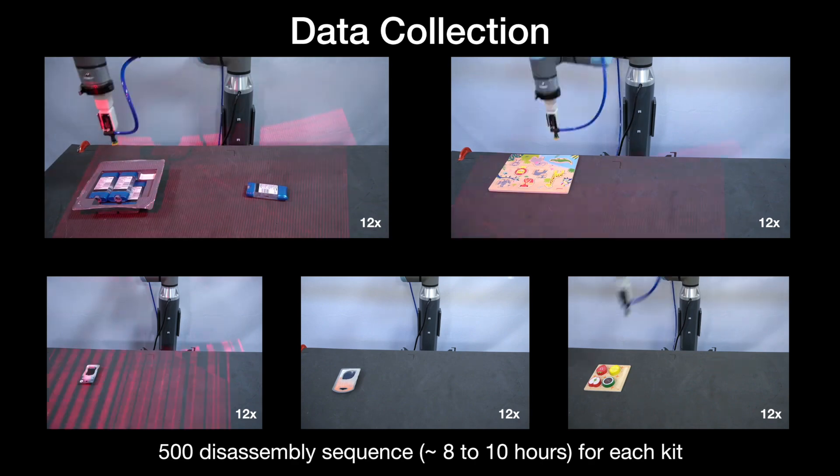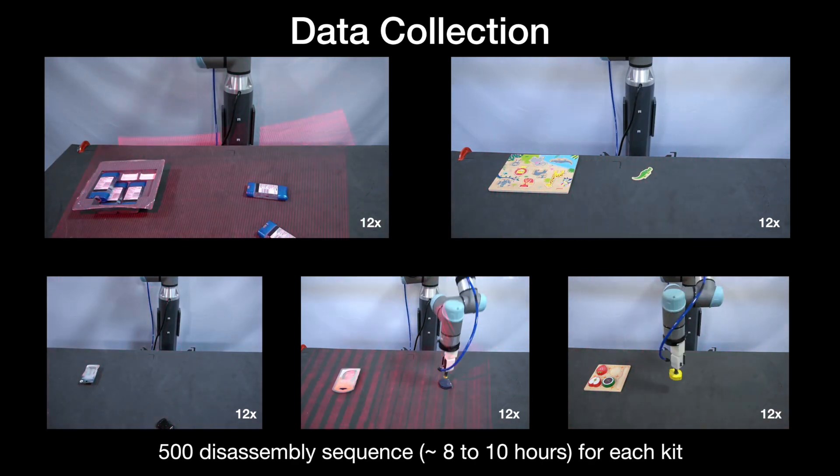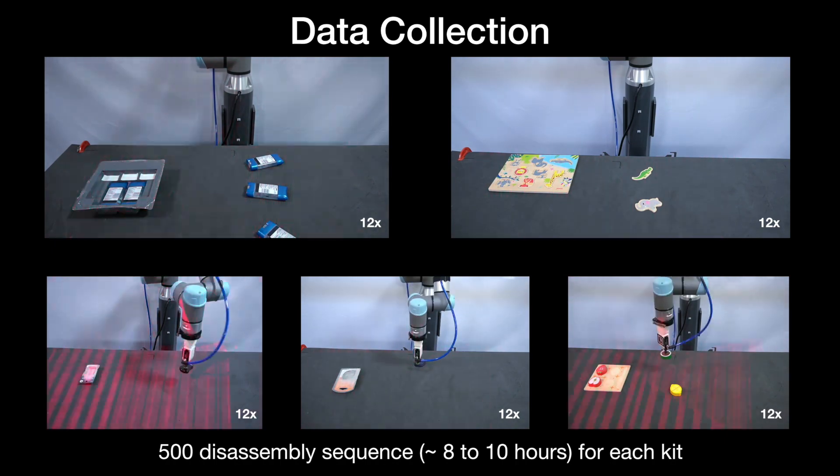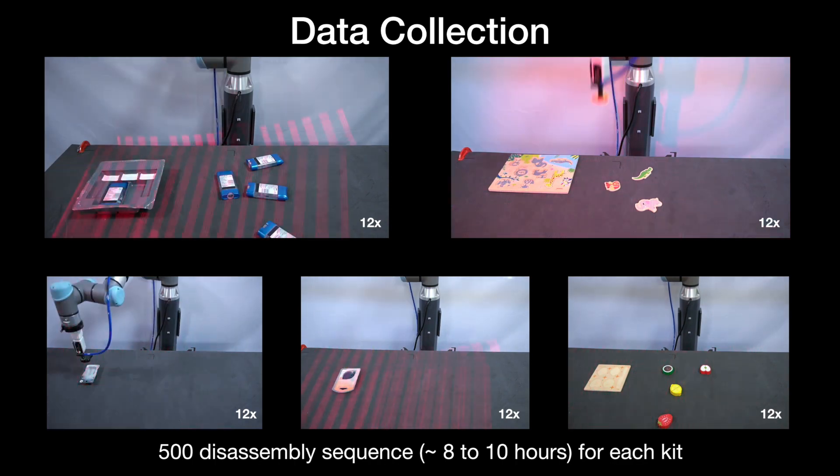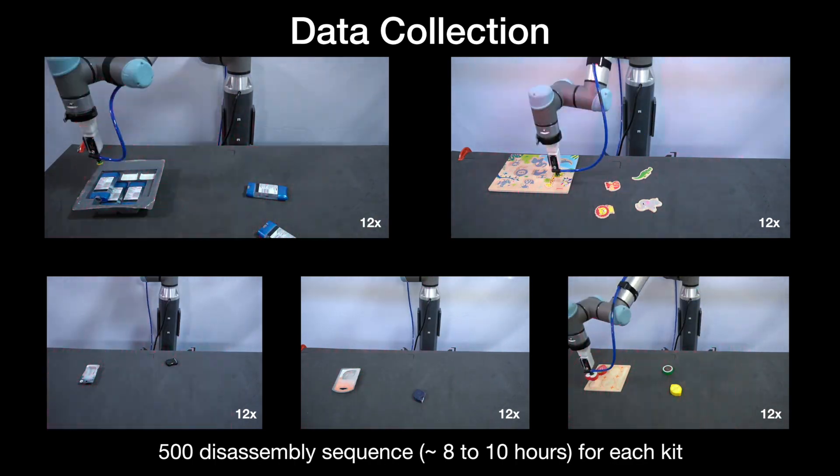To generate the inputs and ground truth labels needed to train our various networks, we create a self-resetting closed-loop system wherein the robot continuously disassembles the kit, then performs it in reverse to reset the system to its initial state.